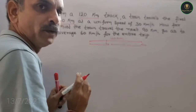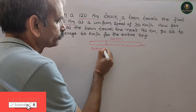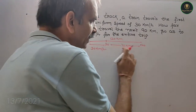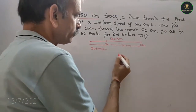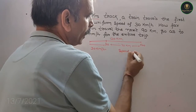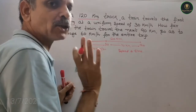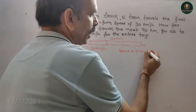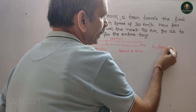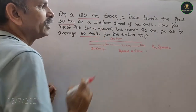Up to your 30, the speed is 30 km per hour. We have to find out the remaining speed and the time, to get the average speed of 60 km per hour.